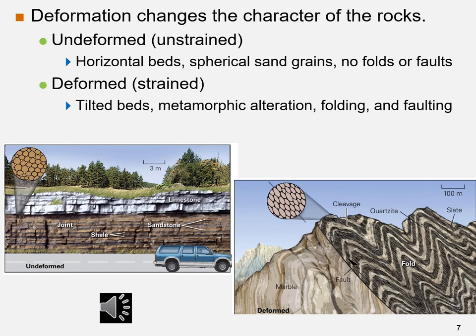On the left, we see undeformed beds of strata along a road, made up of layers of limestone over sandstone and shale, with equant clasts in sandstone. On the right are deformed beds of quartzite and slate in a mountain belt, showing alternating layers that underwent folding deformation in wavy forms. In this scenario, metamorphism occurred first, compression second, and faulting last. The clasts are stretched in the direction of the fault.